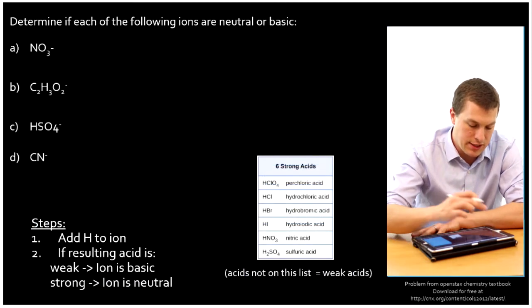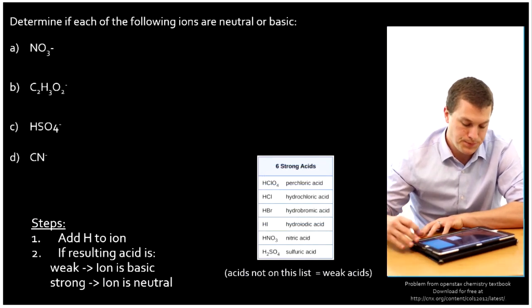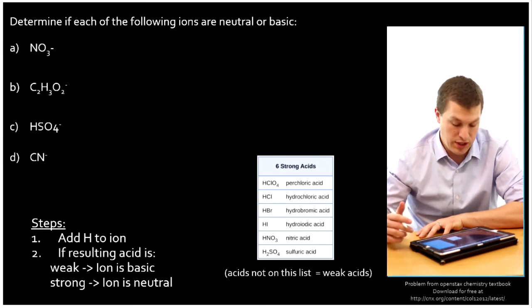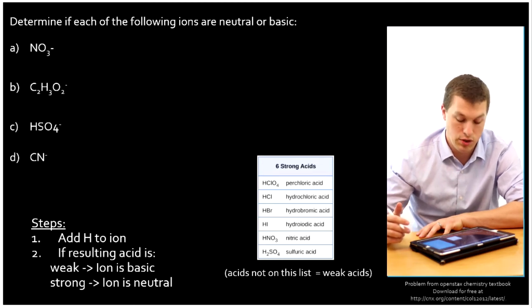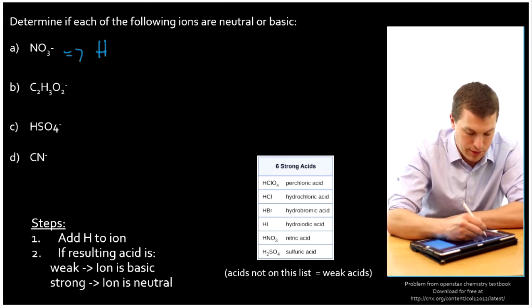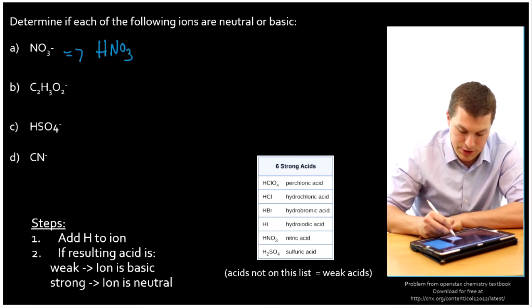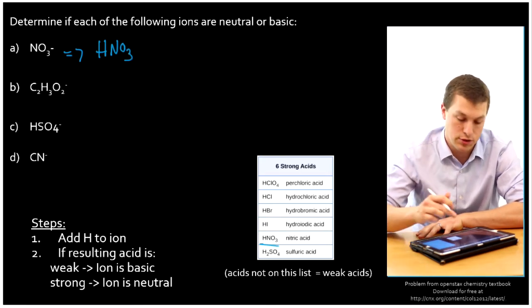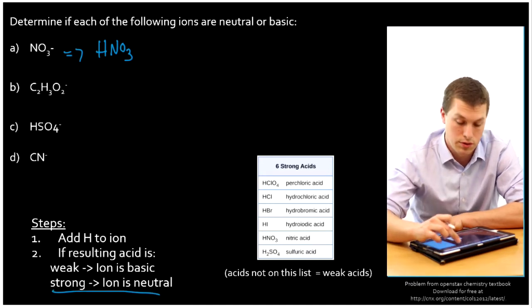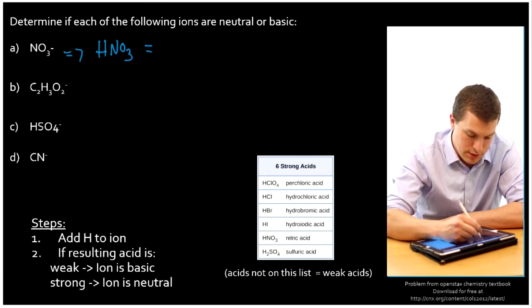Let's do a few more examples. In each case, we're going to add an H ion, and then we're going to decide if that resulting acid is weak or strong. If it's weak, then we know the ion is basic. If it's strong, we know the ion is neutral. So this guy will become HNO3, and we know that's actually on our strong acid list. So it's a strong acid. And so that means that our ion is in fact neutral. So this one is neutral.